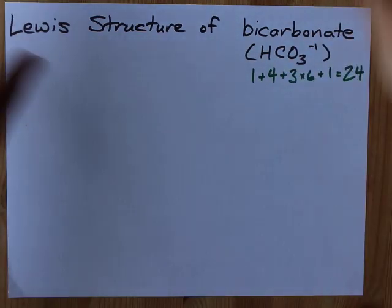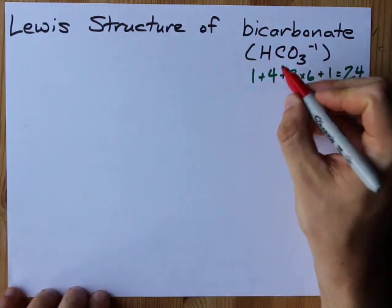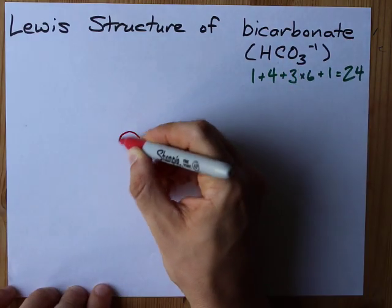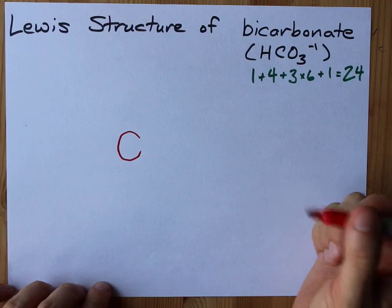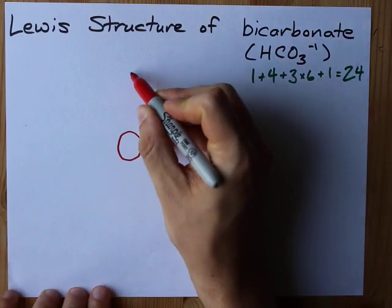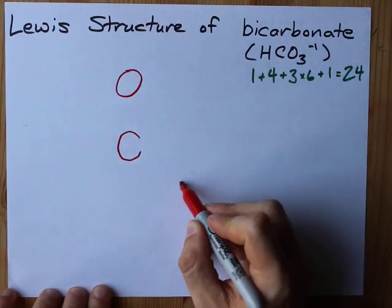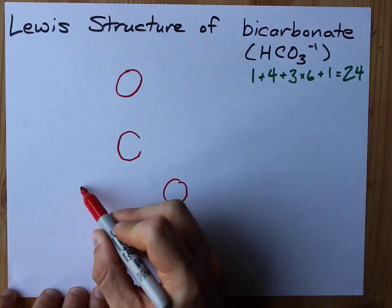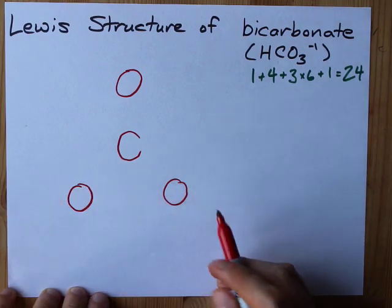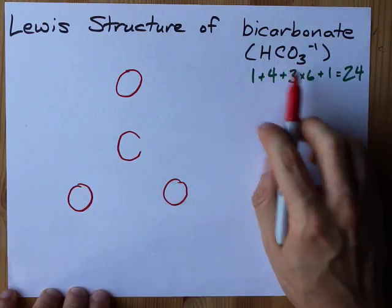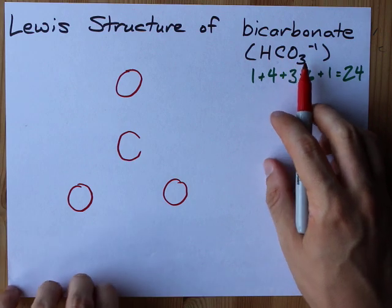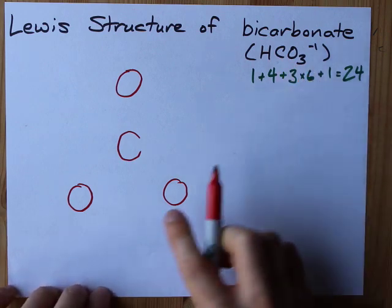Now how do I like drawing my Lewis structures? I like putting the element that can make the most number of bonds, usually the least electronegative atom, in the center, and I surround it with the other atoms. Now I'm going to add one extra caveat to that. If you have hydrogen on an oxyanion, that hydrogen is going to be connected to one of the O's.